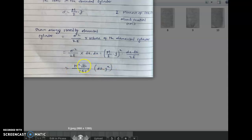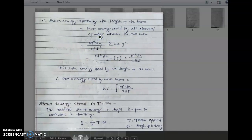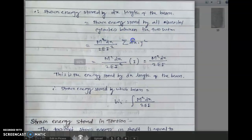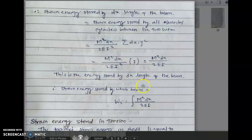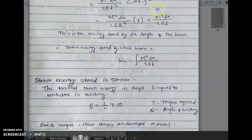The total strain energy stored in the beam is the integration or summation over all elemental cylinders between the two sections. The strain energy stored by dx length of the beam is M squared·dx upon 2E·I squared into I, which equals M squared·dx upon 2E·I. Therefore, the total strain energy stored by the whole beam is U equals the integral of M squared·dx upon 2E·I.